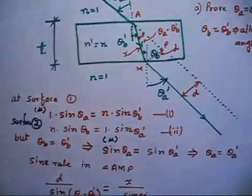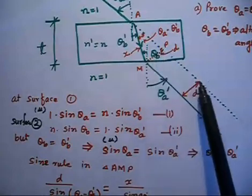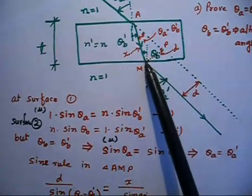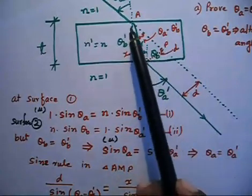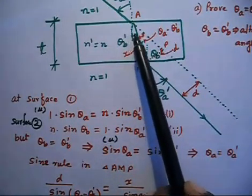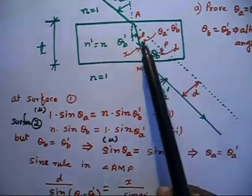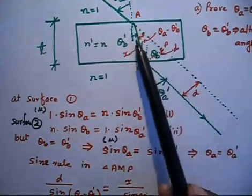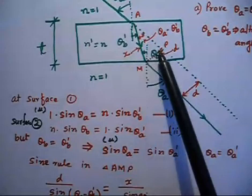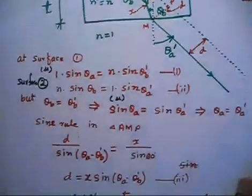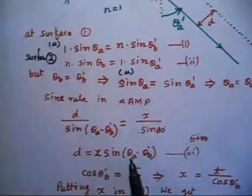Now let us look at triangle A, M, P. This perpendicular distance is d — that is the lateral displacement, the distance between the two parallel lines. If I drop a perpendicular from this point to the extended incident line, this distance is d. Let this distance A-M be x. This angle is theta_b', this angle is theta_a, so this angle is theta_a minus theta_b'. Applying the sine rule in this triangle: d divided by sine(theta_a minus theta_b') equals x divided by sine 90°. So d equals x times sine(theta_a minus theta_b').